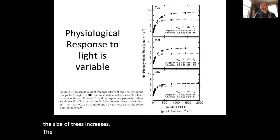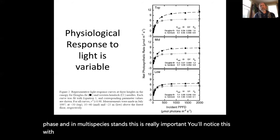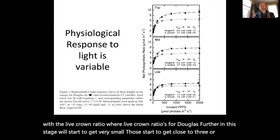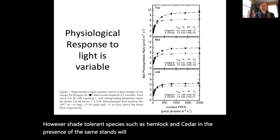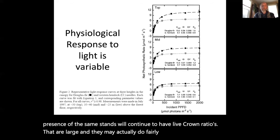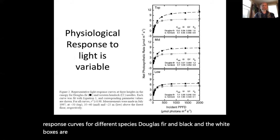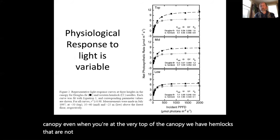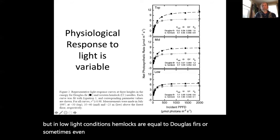The physiological response to light can drive a lot of what happens in this phase, and in multi-species stands this is really important. You'll notice this with the live crown ratio — live crown ratios for Douglas fir at this stage will start to get very small, close to 0.3 or less. However, shade-tolerant species such as hemlock and cedar will continue to have large live crown ratios and may do fairly well in low light conditions. A graph here shows photosynthetic response curves for Douglas fir and hemlock: hemlocks don't respond as strongly to high light values, but in low light conditions they are equal to or sometimes more productive than Douglas firs.